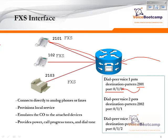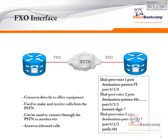When the phone is used to make a call, all the user has to do is pick up the handset and dial the number. If the router knows how to reach that number, the router will take the necessary steps to complete the call.